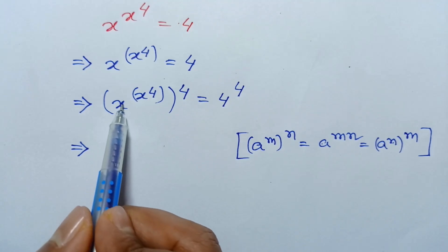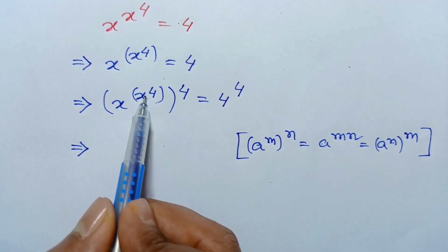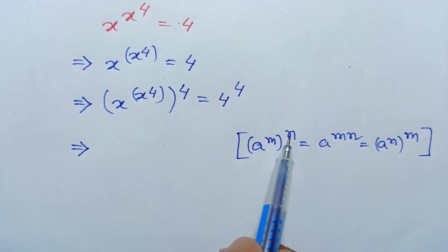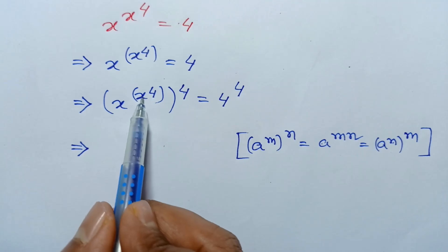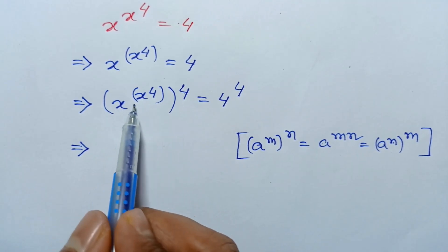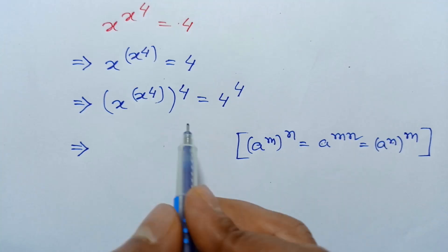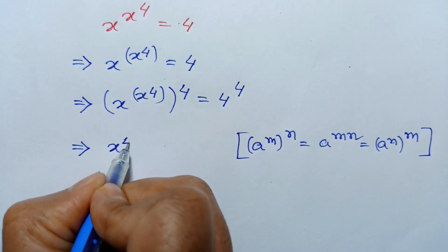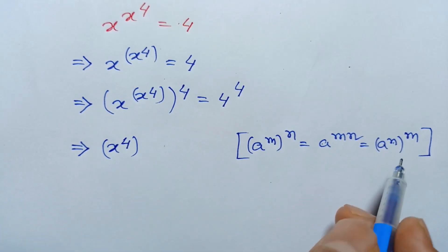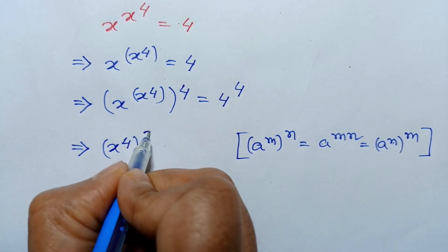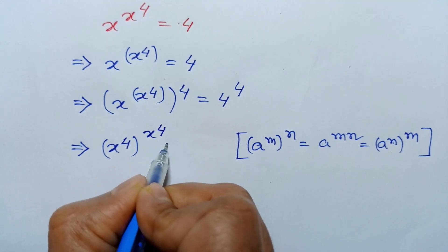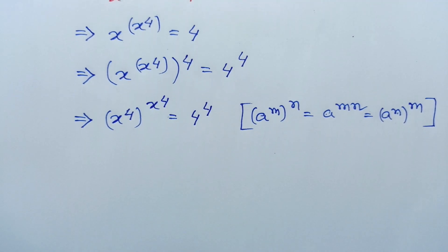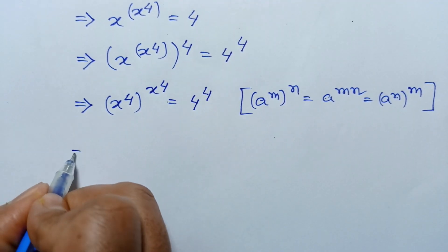Here, x is a, x to the power 4 is m, and 4 is n. So a to the power m, whole to the power n, we can write it as a to the power n. So x to the power 4, whole to the power x to the power 4, is equal to 4 to the power 4.